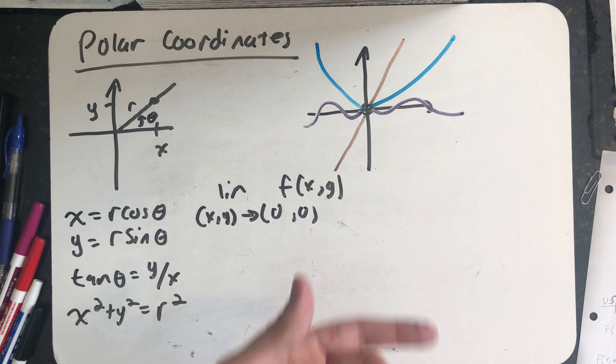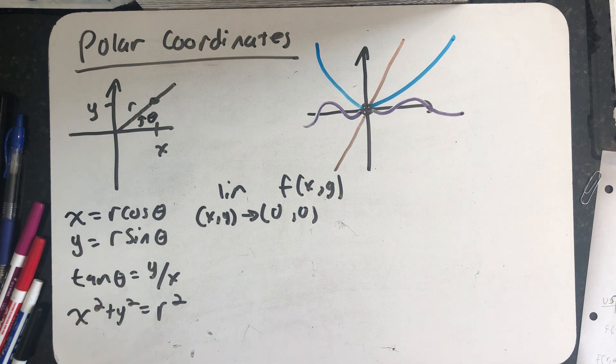r, the distance a point is away from the origin, is going to zero. And in fact, it doesn't matter what theta does as long as r goes to zero.